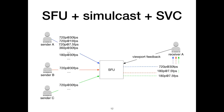With VP8 simulcast, we also get temporal scalability. In total, participants send nine different qualities that the bridge can choose from when computing the stream configuration to send towards a specific receiver: 720p at 30fps, 720p at 15fps, 720p at 7.5fps, all the way down to 180p at 7.5fps.